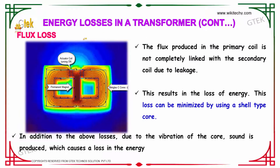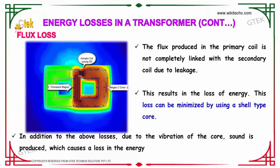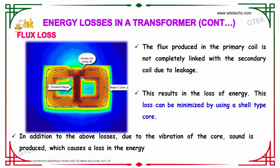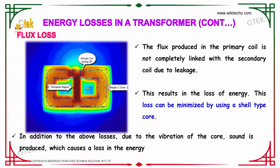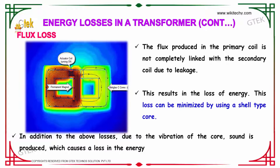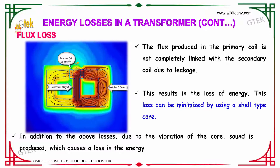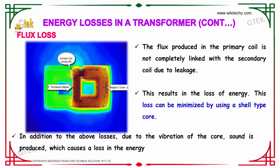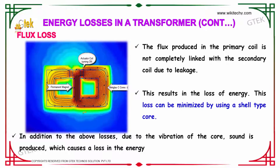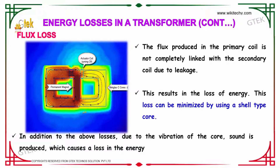Now we will talk about flux loss. The flux produced in the primary coil is not completely linked with the secondary coil due to leakage. We are able to see there is a leakage here. This results in the loss of energy. This loss can be minimized by using a shell-type coil.